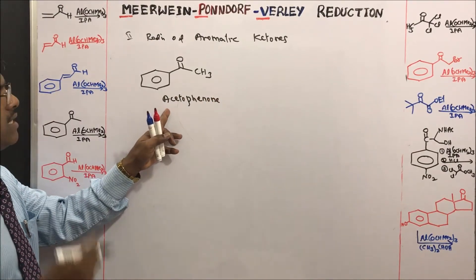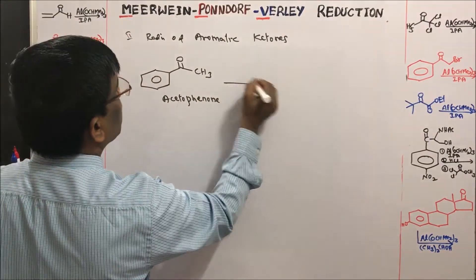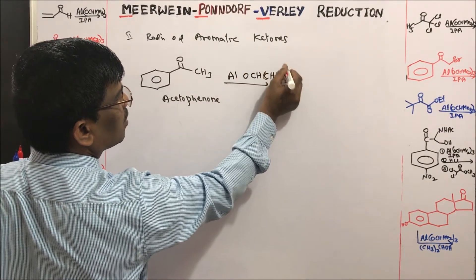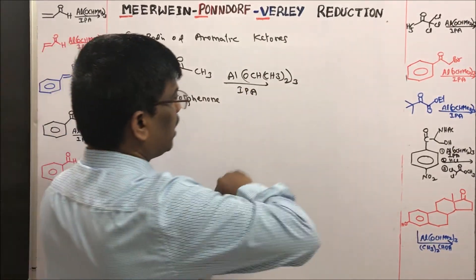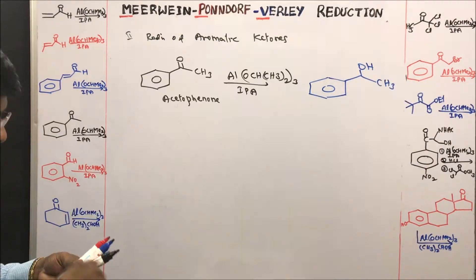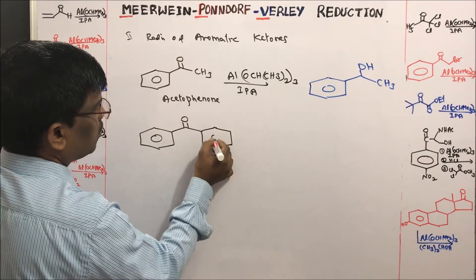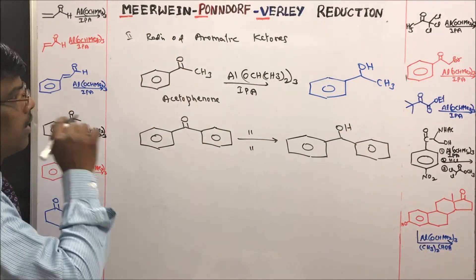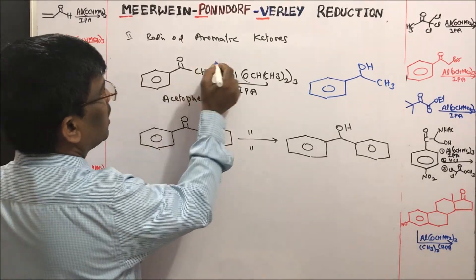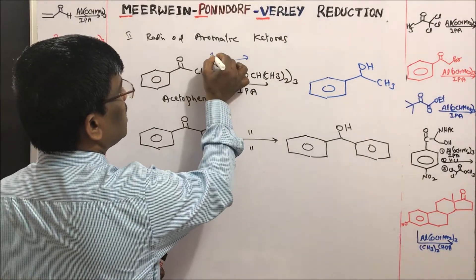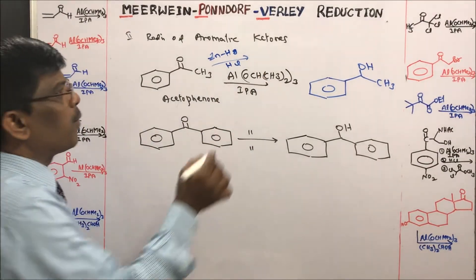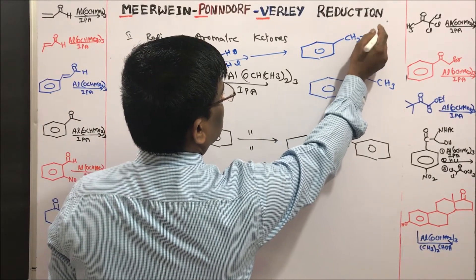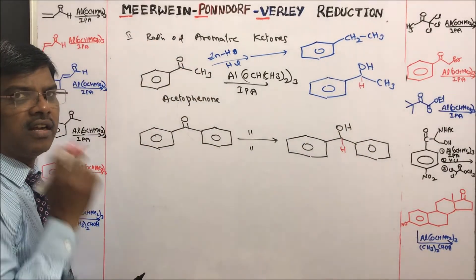Reduction of aromatic ketones: acetophenone (methyl phenyl ketone) in MPV reduction conditions — aluminum isopropoxide in isopropyl alcohol — gives the corresponding alcohol. Benzophenone under the same MPV reduction conditions also gives the corresponding alcohol. For comparison, Clemmensen reduction using zinc amalgam in HCl would give ethylbenzene (CH₂CH₃) instead.